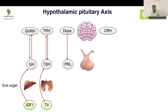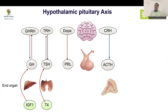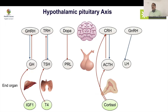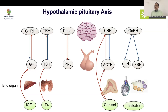CRH is a 41 amino acid compound that controls ACTH production, which in turn regulates cortisol production. Cortisol also inhibits ACTH and CRH as feedback inhibition. Additionally, GnRH controls LH and FSH, which together regulate testosterone and estrogen production, with negative feedback on the axis.